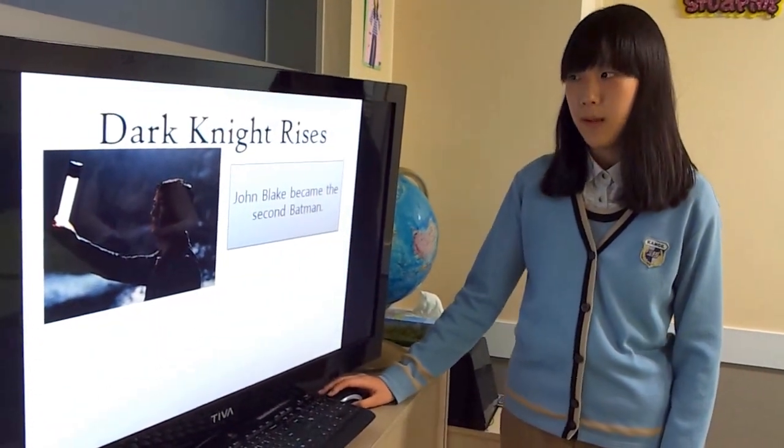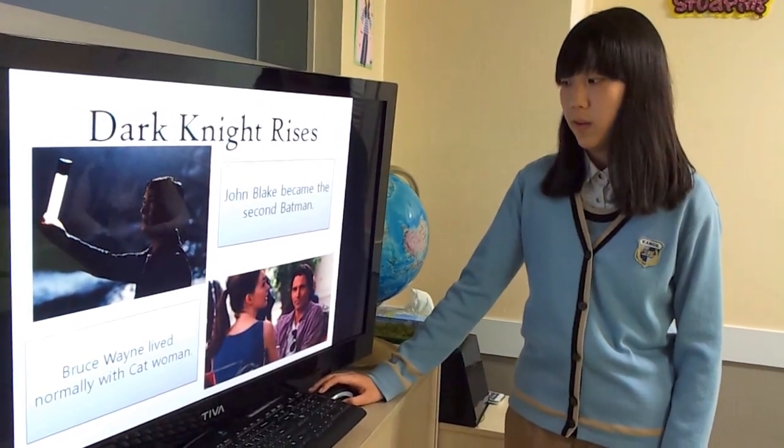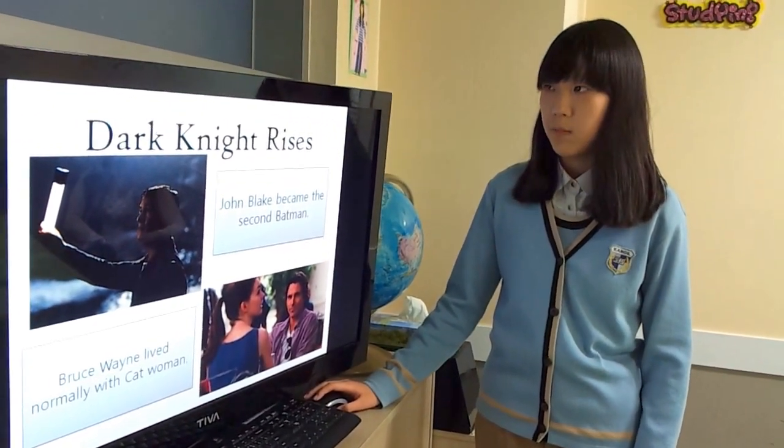John Blake became the second Batman. And Bruce Wayne lived normally with Catwoman. Some people say this scene is just an imagination.